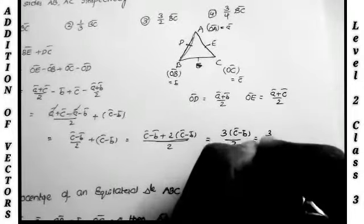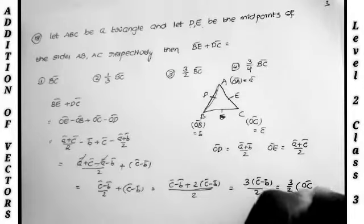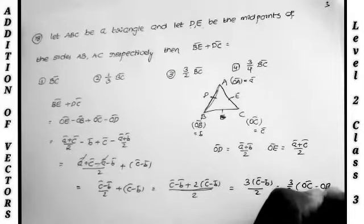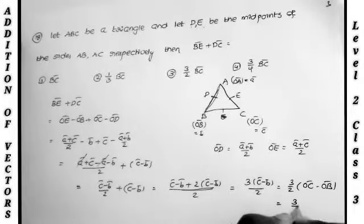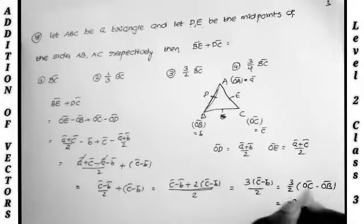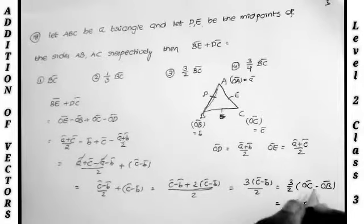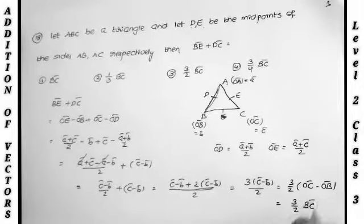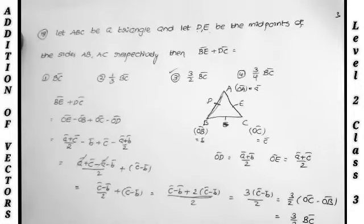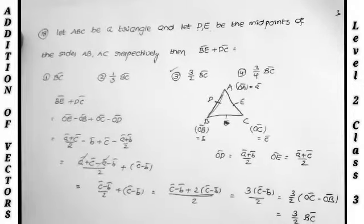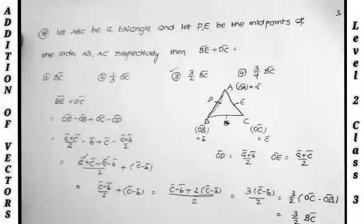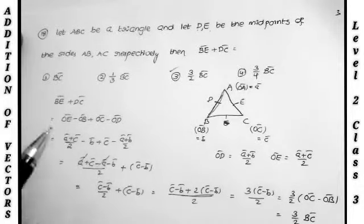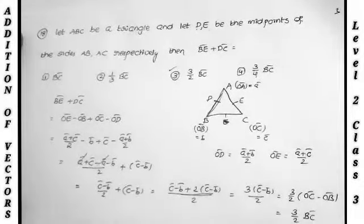This equals 3 by 2 into OC bar minus OB bar, which is nothing but 3 by 2 into BC bar — since BC bar equals OC bar minus OB bar. So the answer is 3 by 2 into BC bar, which is the third option. Very easy calculation; we just need to know this formula and apply simplification.